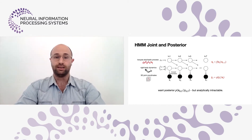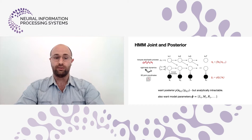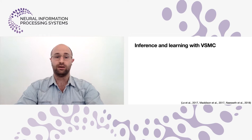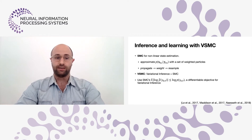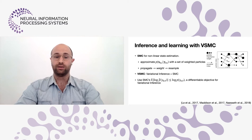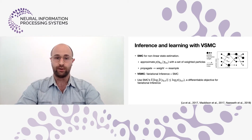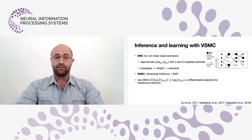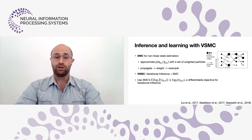We have a transition and emission with nonlinearities inside, and we'd like to infer the posterior over all states given all observations. But this object is analytically intractable, so we resort to approximate methods. We'd also like to learn the parameters of the body model which maximize the likelihood of the data. We do this using variational sequential Monte Carlo, or VSMC. SMC is a method for nonlinear state estimation that approximates the posterior with a set of weighted particles — you propagate them forward in time, compute importance weights, resample the better particles, and iterate. Variational SMC combines SMC with variational inference to do large-scale parameter learning, using the SMC marginal likelihood estimate as a differentiable lower bound on the log marginal likelihood.